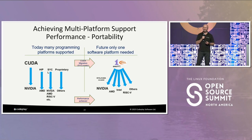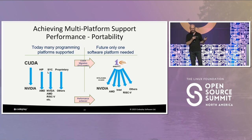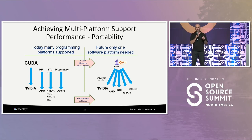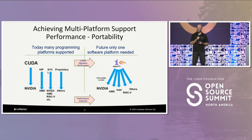Starting on the left, you've got many individual different programming environments going down to different pieces of hardware. Where you want to go is over to the right: a single programming environment where you can program heterogeneously to multiple different processor types. That includes NVIDIA and AMD, who are the leaders in accelerating with their GPUs, as well as Intel, RISC-V, and many other accelerators based on that instruction set.